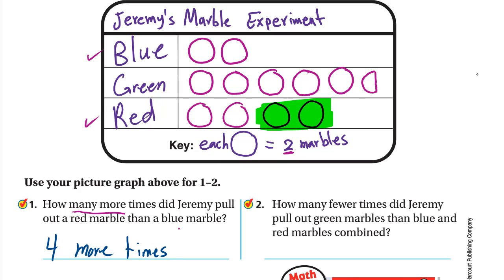Number two: how many fewer times did Jeremy pull out green marbles than blue and red marbles combined? We need the red marbles and the blue marbles combined first, and then we'll compare them to the green. The question says how many fewer, so we are subtracting. We have to combine the blue and red together.